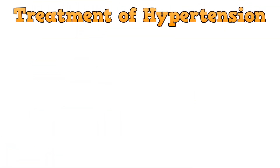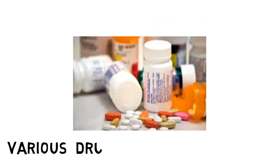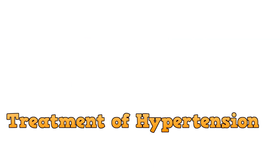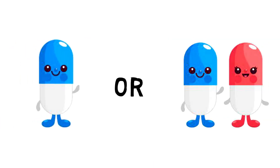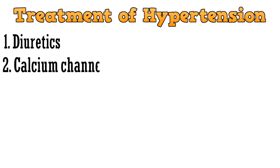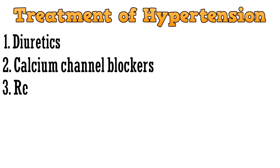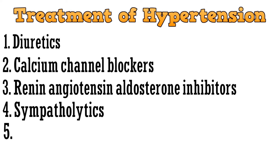Coming to the treatment of hypertension — there are a variety of drugs used to control hypertension. Your doctor may give you a single type of drug or a combination of drugs depending upon your situation. The drugs used to treat hypertension include diuretics, calcium channel blockers, renin-angiotensin-aldosterone inhibitors, sympatholytics, and vasodilators. You should never take any of these drugs without proper consultation with a doctor.